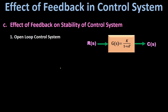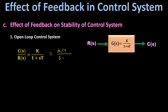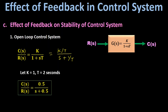For the open-loop control system, the overall transfer function C(s)/R(s) equals K divided by 1 plus S·T. Taking T common from the denominator gives K/T divided by S plus 1/T. Substituting K equal to 1 and T equal to 2 seconds, the overall transfer function becomes 0.5 divided by S plus 0.5. The poles are the roots of the denominator set equal to zero, giving a pole at S equal to minus 0.5.